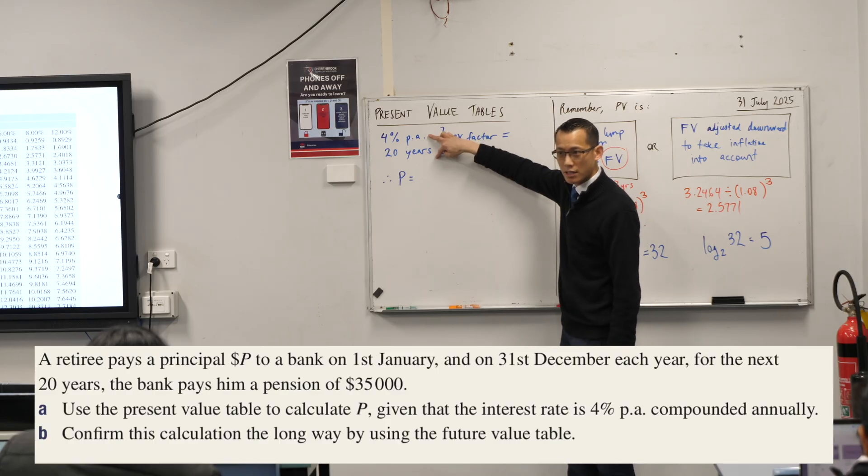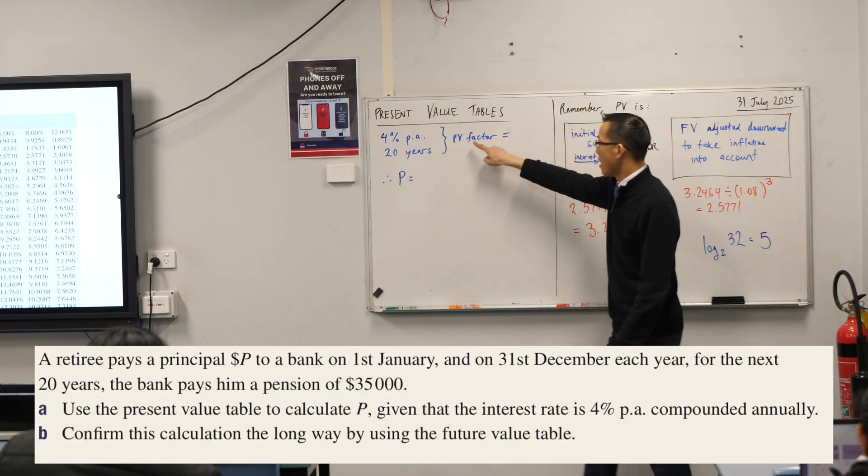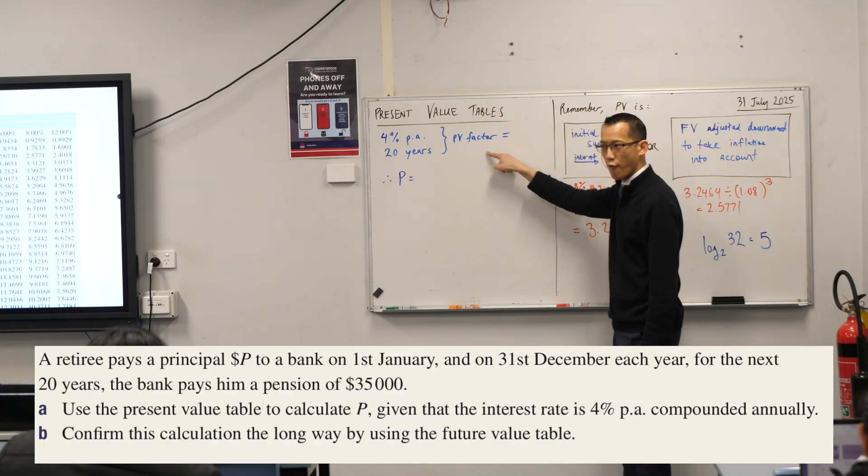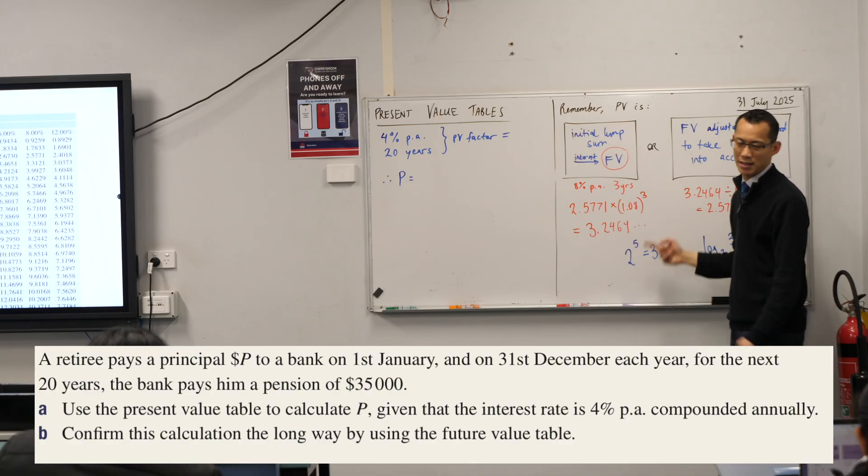Now these two things correspond to the column and the row of the present value table. When we read to the right spot we're going to get a present value factor. We call it a factor because you multiply by this number. That's what a factor is.